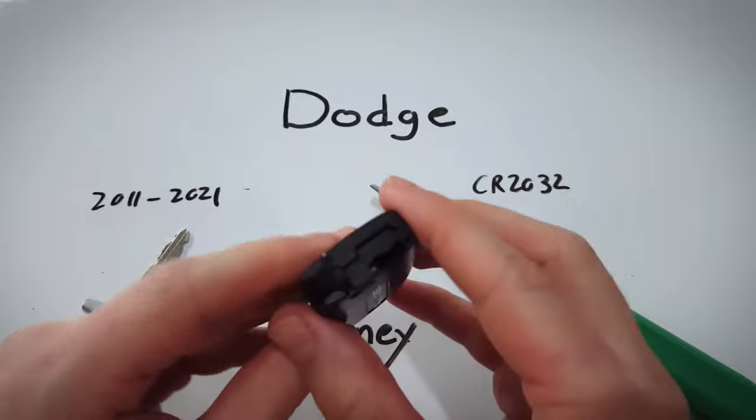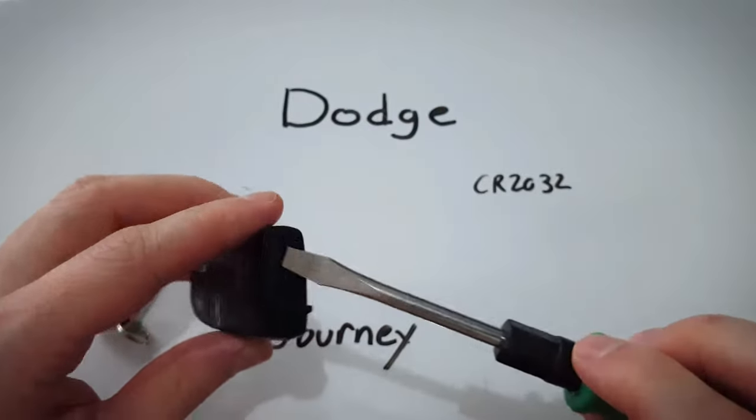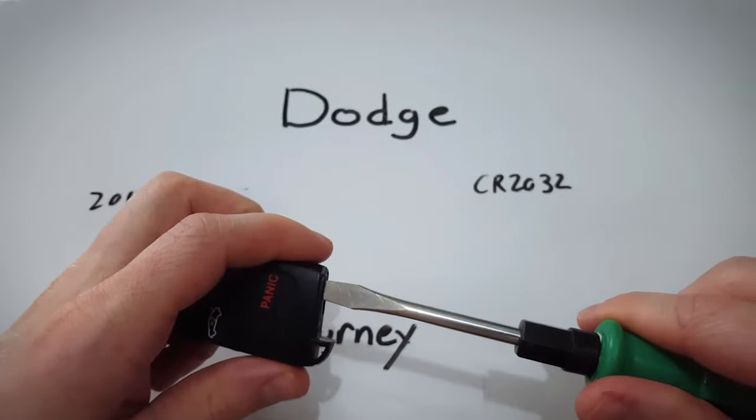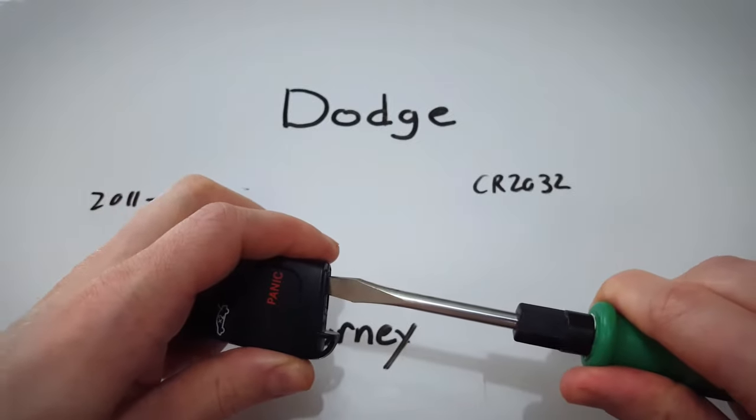Now we can see the keyhole and just opposite that a little slot, a little indentation. Go ahead and put your flathead screwdriver in that area above the keyhole there and just gently twist.